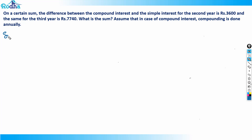Look at this question — it's a very conceptual question and we'll learn some concept from it too. On a certain sum, the difference between compound interest and simple interest for the second year is rupees 3600, and for the third year is 7740. What is this sum? Let's revise the concept.